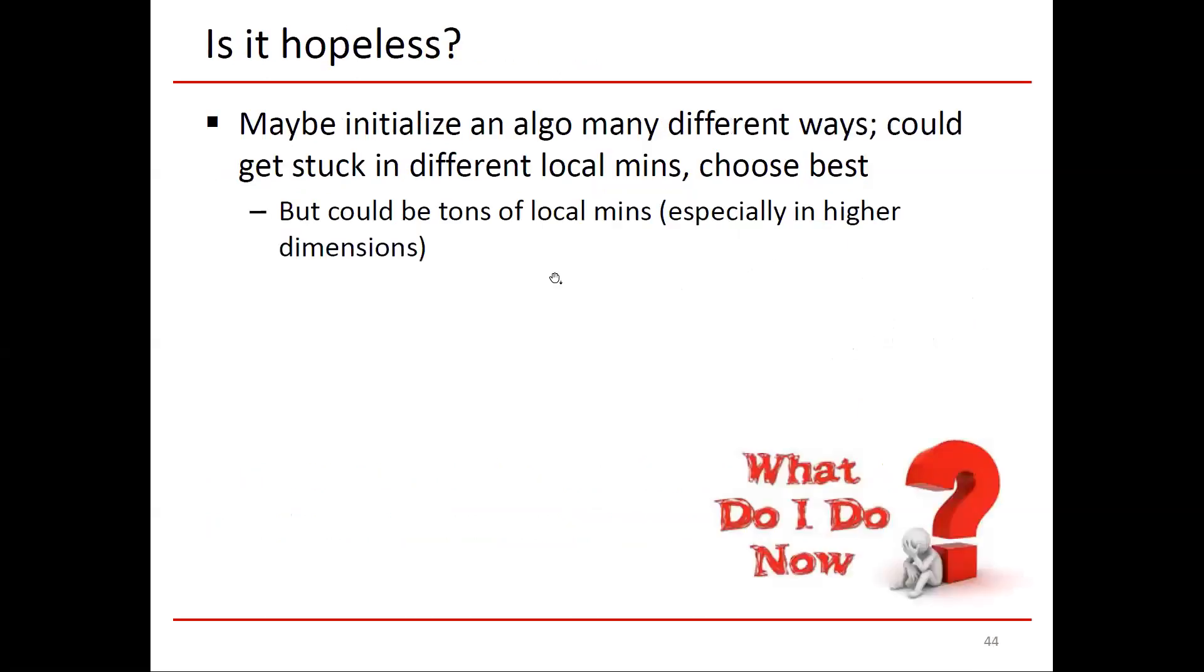You might feel this might be hopeless. What do we do? Maybe we can initialize an algorithm many different ways, but what if each gets stuck in a different local minimum? There could be a lot of local minimums. This problem is especially pronounced in higher dimensions. In higher dimensional geometry, there may be a ton of different minimums. Even if you run it a hundred times, you might end up being very far from the global minimum.